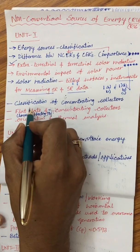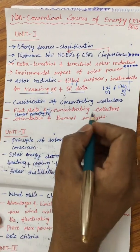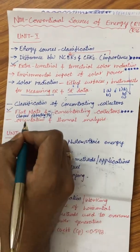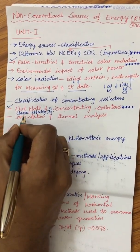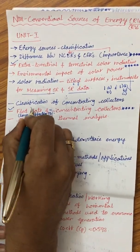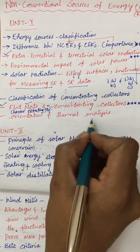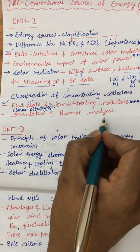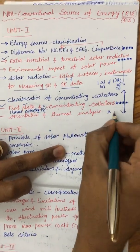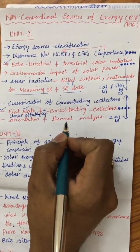The second question can be expected from the classification of concentrating collectors. Flat plate versus concentrating collectors is a very important and near-certain question for this academic year. For flat plate collectors, you may be asked about the different losses affecting efficiency. Additionally, orientation and thermal analysis of concentrating collectors are key topics — these three topics together cover the second question, which may be an A/B split or A/B/C asking 5-mark definitions.